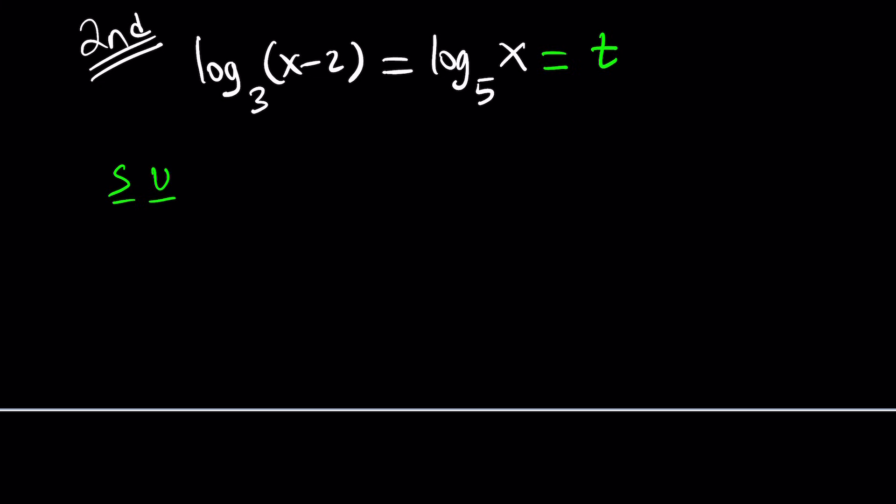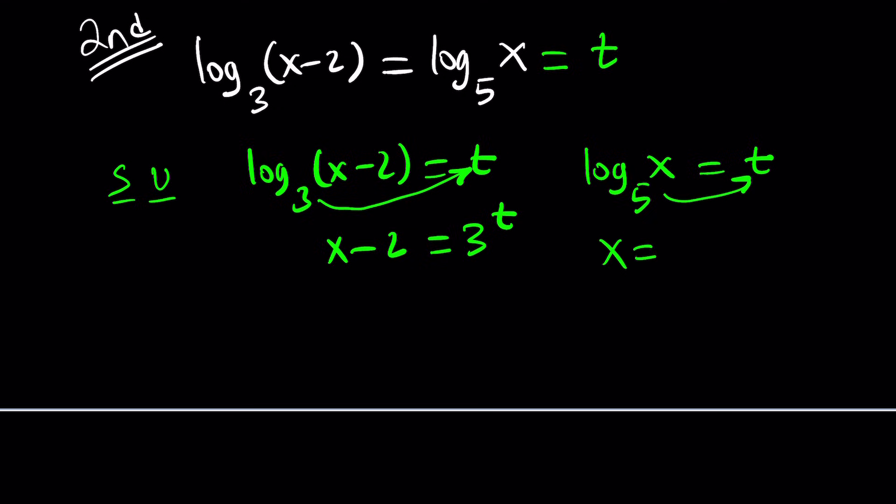From here, we use properties of logarithms. If log₃(x-2) equals t, then that means x minus 2 equals 3 to the power t. What about the second one? Log₅(x) equals t means 5 to the power t equals x. You might be questioning: from a single equation, you got two equations. How is that helpful?